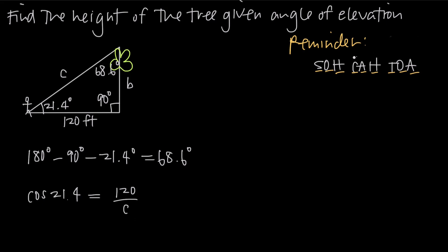The reason that we used the cosine portion of SOH CAH TOA first is because the only side of the triangle that we have is the adjacent side, which means we would have wanted to use cosine or tangent, but cosine is easier to evaluate. We multiply both sides by C, and get C times cosine of 21.4 equals 120. Then we divide both sides by cosine of 21.4 to get C equals 120 divided by cosine of 21.4. When we use our calculator, C is approximately 128.8859 feet.